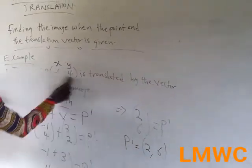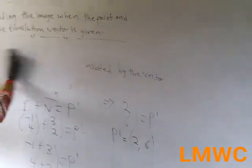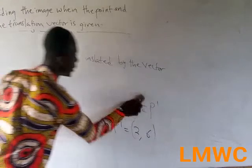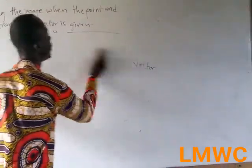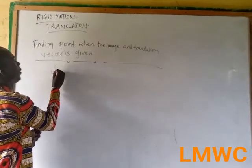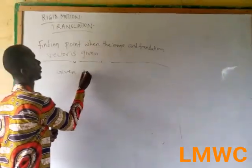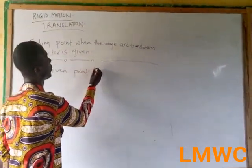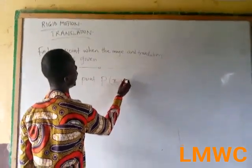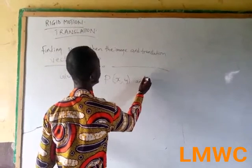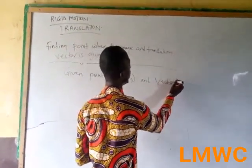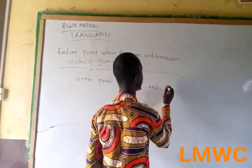The second heading is: I will give you a translation vector and the image, and I will ask you to find the points. Given point P as (x, y), and translation vector as (a, b), and the image.